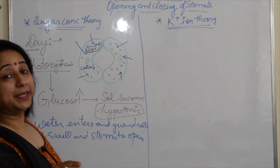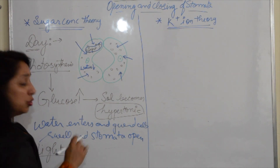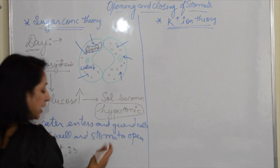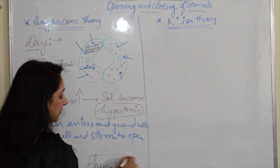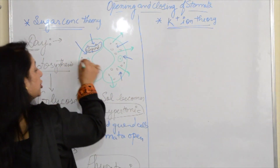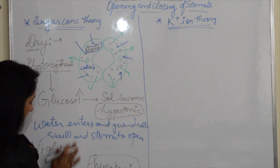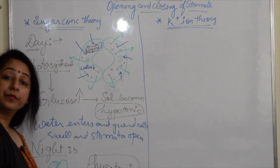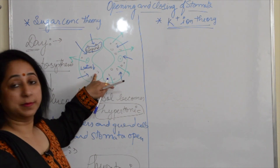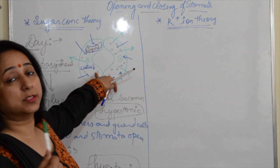The opposite happens during night. At nighttime, no photosynthesis takes place, so the sugar concentration falls down. The solution now becomes hypotonic because sugar is less and water is more. So water, according to its tendency, starts flowing out, which leads to shrinkage of the guard cells and the stomata close. During day: more photosynthesis, more glucose, hypertonic solution, water enters, guard cells swell, stomata open. Opposite at night.